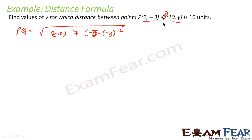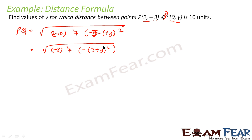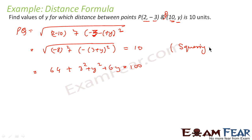Very simple question. We just find the distance between P and Q and set it equal to 10. Distance PQ = √((2 − 10)² + (−3 − y)²) = √((−8)² + (−3 − y)²). Squaring both sides: 64 + (3 + y)² = 100, which expands to 64 + 9 + y² + 6y = 100.